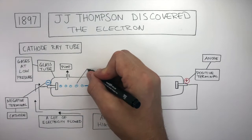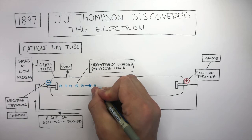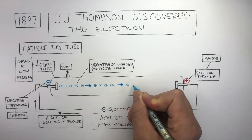This causes negatively charged particles to be fired out of the cathode, as shown here by the blue circles. These negatively charged particles continue flowing through the glass tube until they reach the anode.